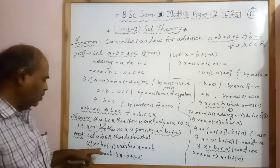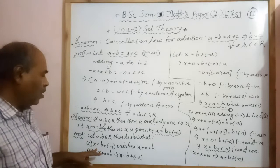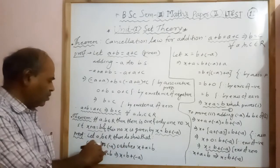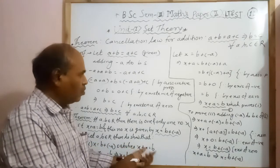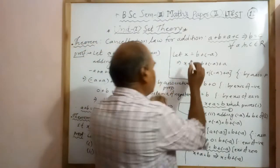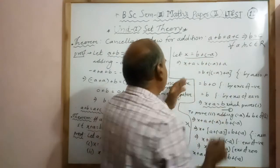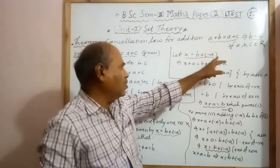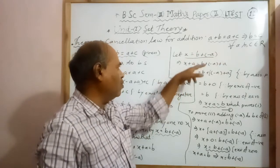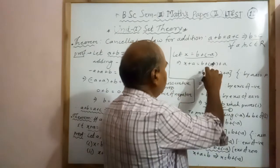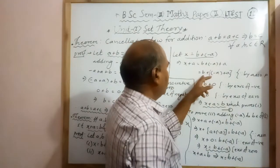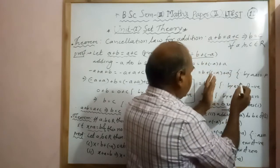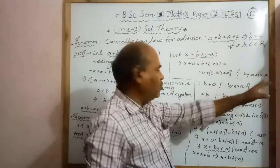For the first part, we have to show that x equals b plus minus a satisfies the equation. Consider x equals b plus minus a and show that x plus a equals b. Adding a on both sides, in the left hand side and also in the right hand side, therefore x plus a equals b plus minus a plus a. Then by the associative property, we associate minus a and a in one bracket.